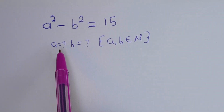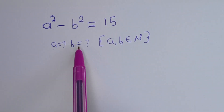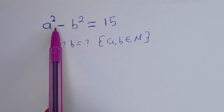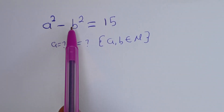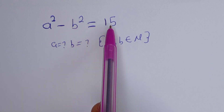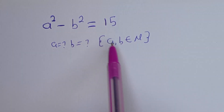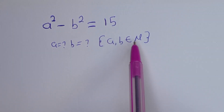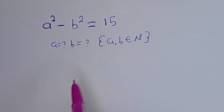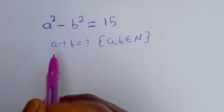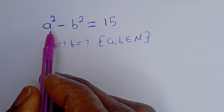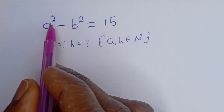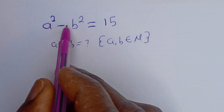Hello. How to solve for a and b in this equation: a² - b² = 15, where a and b are members of the natural numbers.